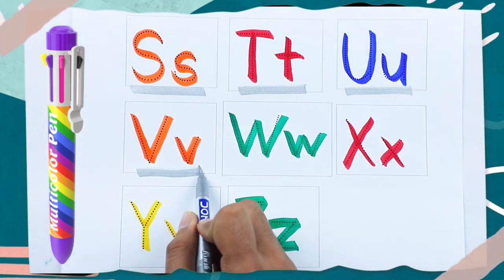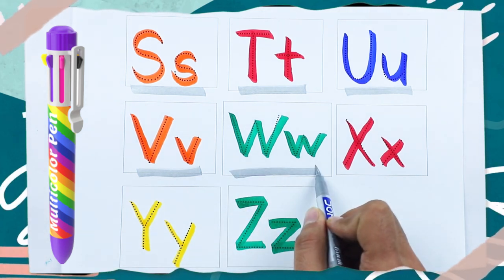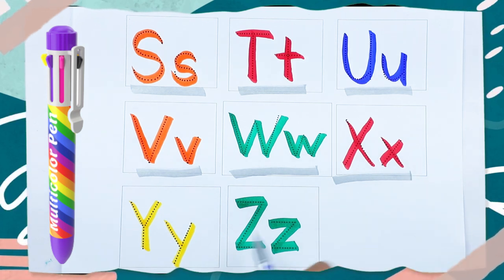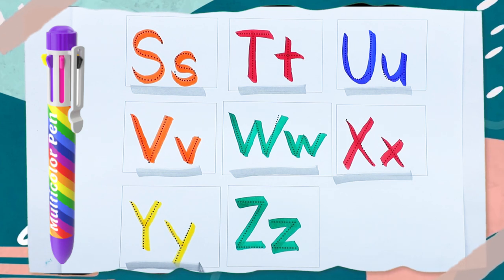Orange color V, V for Van, Green color W, W for Watch, Red color X, X for Xylophone, Yellow color Y, Y for Yellow.